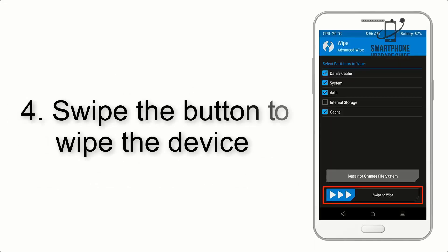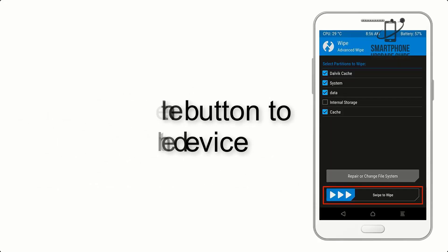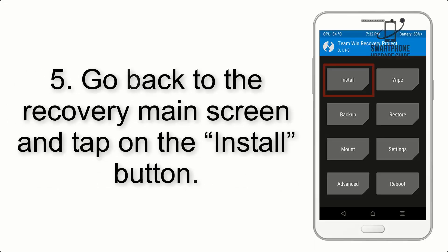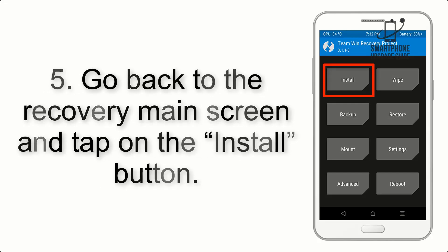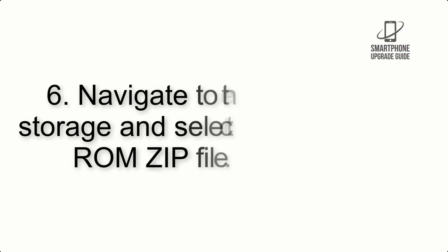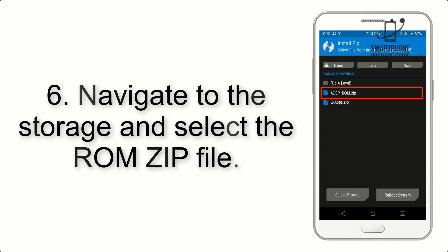Step 4: Swipe the button to wipe the device. Step 5: Go back to the Recovery main screen and tap on the Install button. Step 6: Navigate to the storage and select the ROM zip file.